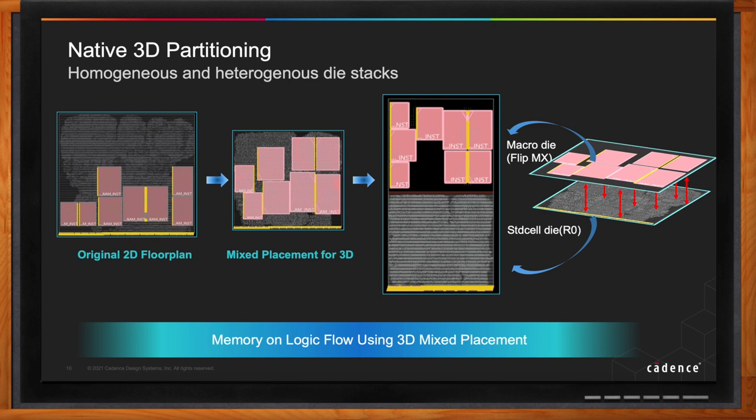It really addresses the memory wall limitation that's a part of Moore's Law, where memory latency — as opposed to the execution engine — is really what limits the performance of a high-performance processor. With this automated partitioning, our Integrity 3D IC flow has a way to do native 3D partitioning, starting with the original 2D netlist and existing floor plan that has been implemented — we call it mixed placement for 3D designs.